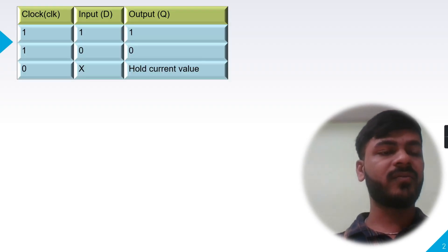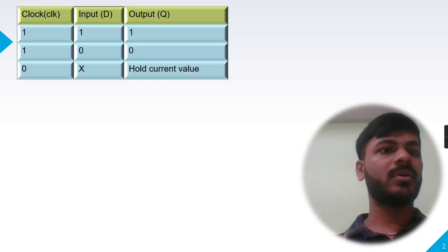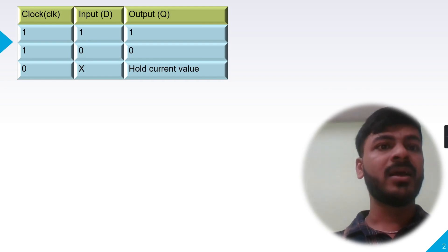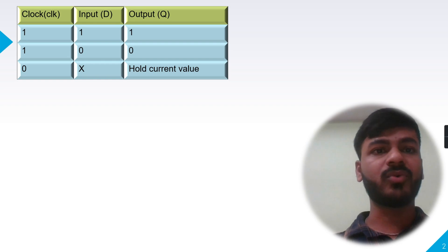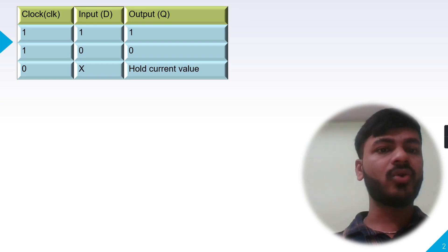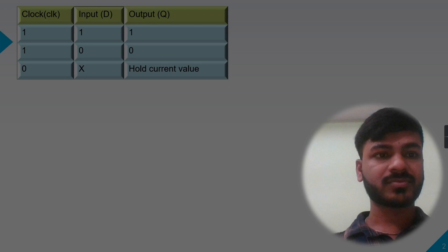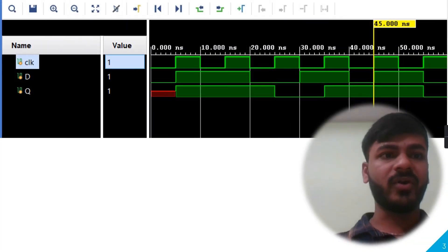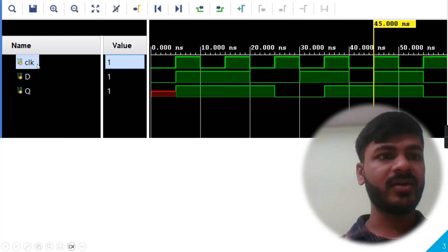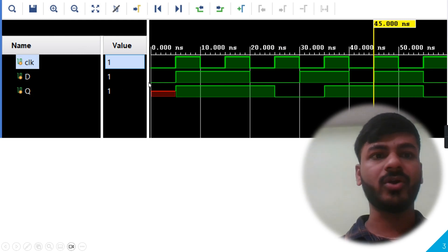This is the truth table of a positive edge triggered D flip-flop. If there is a positive clock edge, then D will be transferred to the output Q. If there is no positive edge, then Q will hold its current value. You can see the waveform where we have a clock input, D, and output Q.